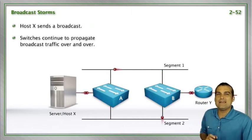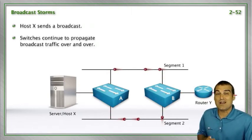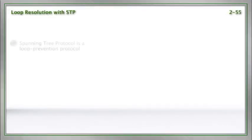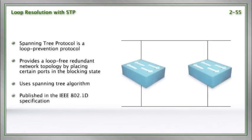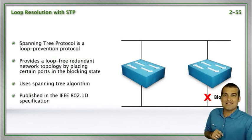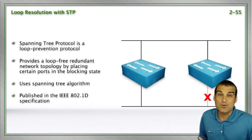This is where spanning tree protocol is going to come into the equation for us. Spanning tree protocol is going to intelligently block a particular port of the topology, so we don't have the looping traffic that results.